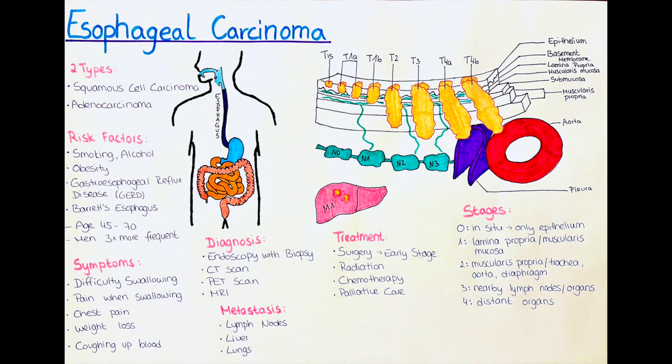There are two main types of esophageal carcinoma: squamous cell carcinoma and adenocarcinoma. Squamous cell carcinoma is more common in the upper part of the esophagus, while adenocarcinoma is more common in the lower part. Squamous cell carcinoma is the most common type of esophageal cancer worldwide, accounting for approximately 80% of all cases.